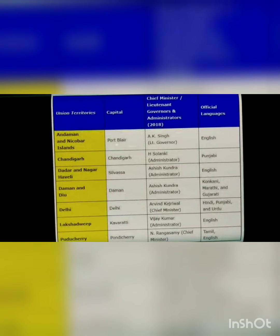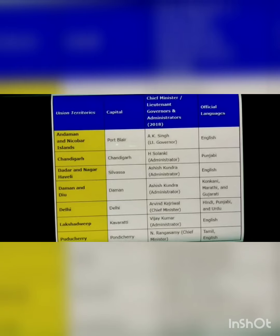There are 29 states in India, one national capital territory, that is Delhi, and six union territories. This is the list of union territories, where the last entry is Delhi. Delhi is a national capital territory.